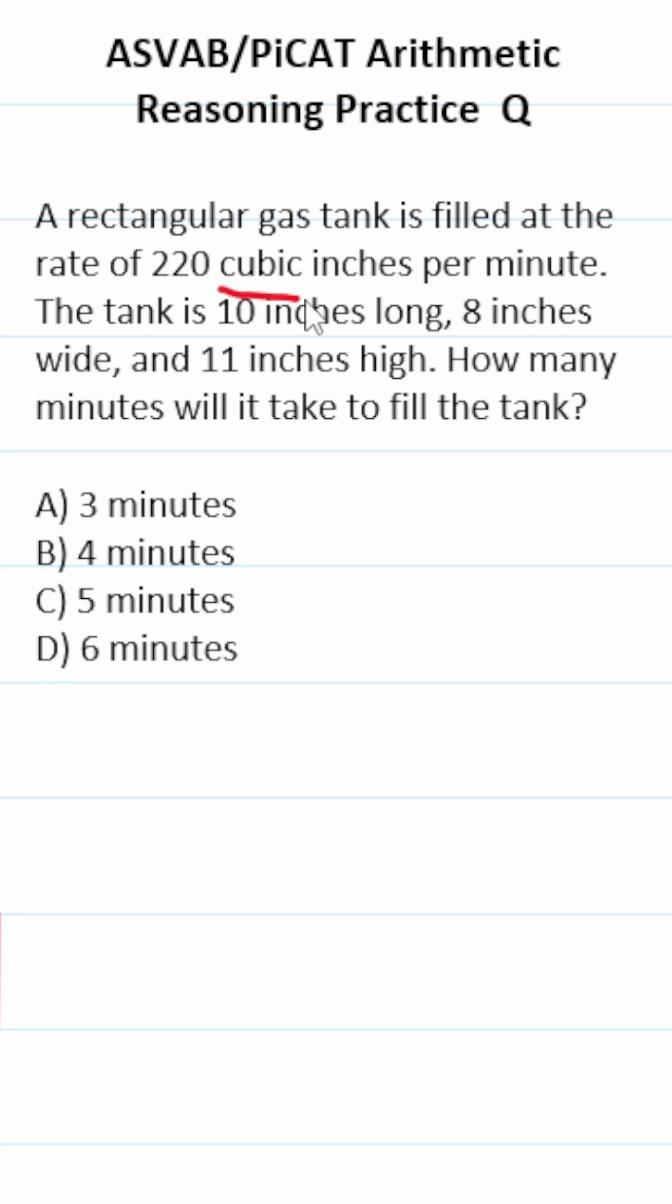This term right here, cubic inches, is a clue that you're going to be finding the volume of our rectangular gas tank, which is a rectangular prism. How do you find the volume of a rectangular prism? It's length times width times height.